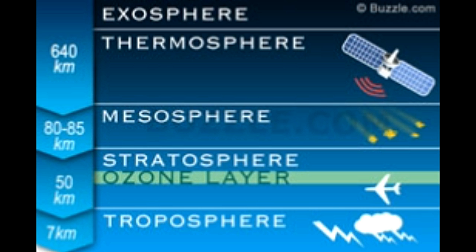Troposphere is the first layer above the Earth's surface and contains around half of the Earth's atmosphere. Stratosphere, the stable layer, is next, followed by mesosphere housing meteors and rock fragments. Thermosphere comes forth. Above it lies the last atmospheric layer, ionosphere — a very thin layer that meets outer space through the exosphere.